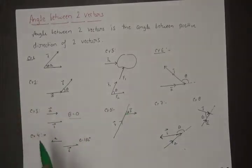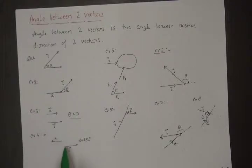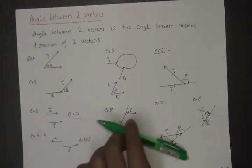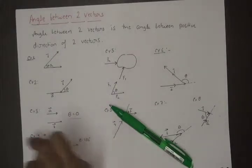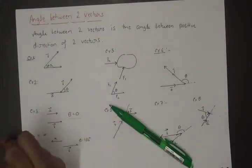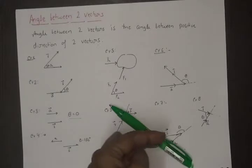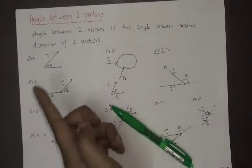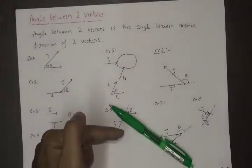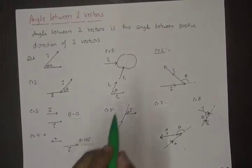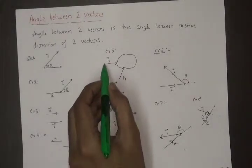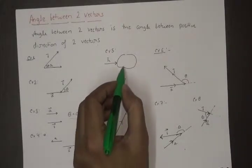Next example: this is the first vector and this is the other vector. What is the angle between these two vectors? The positive direction of A is in this direction and the positive direction of B is in this direction. The angle between the positive directions is equal to 180 degrees.